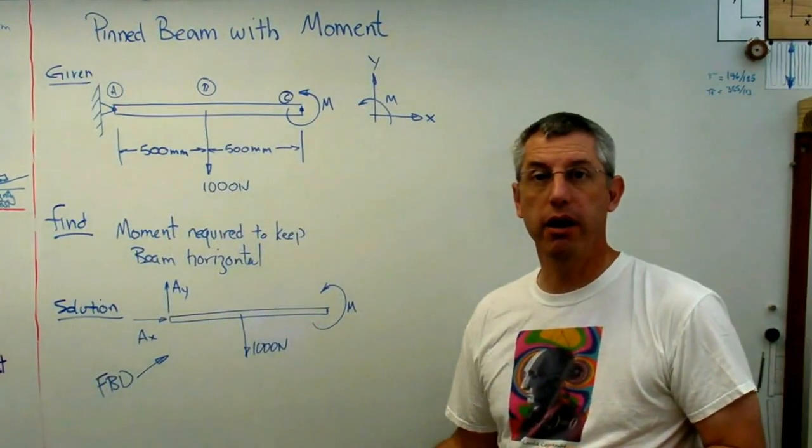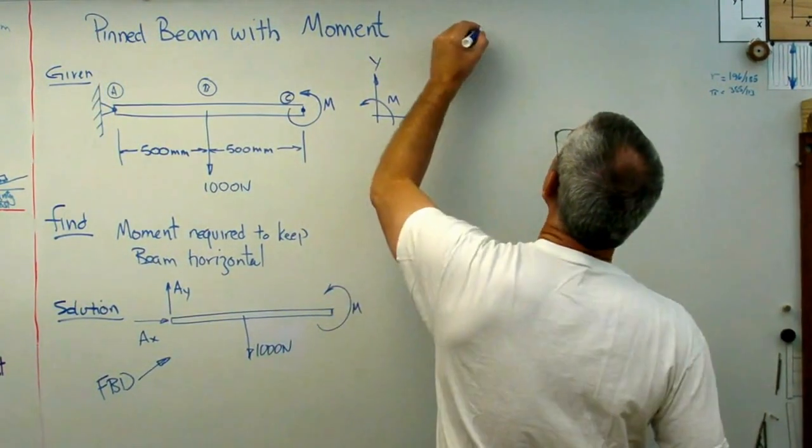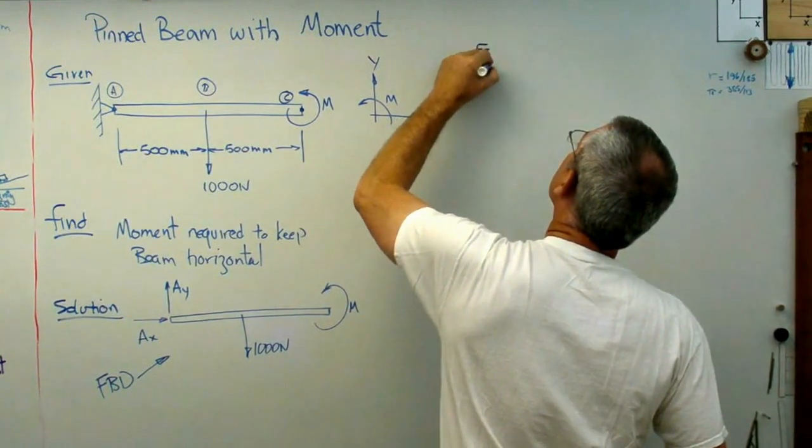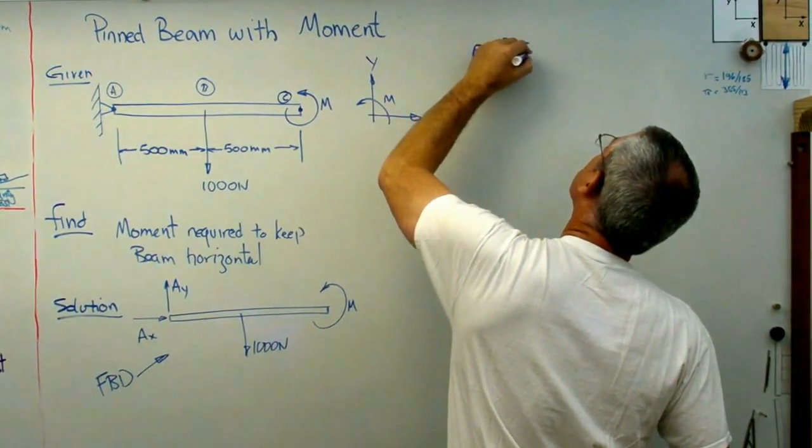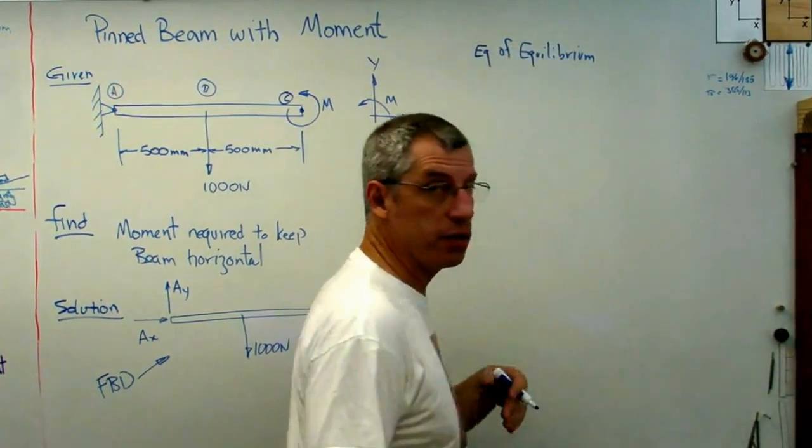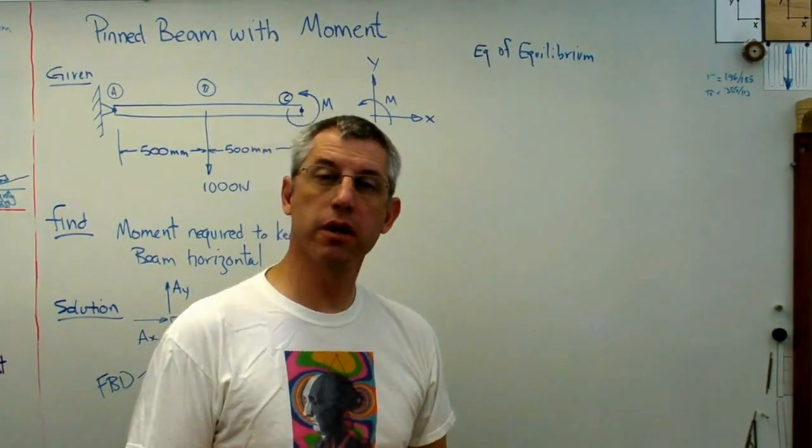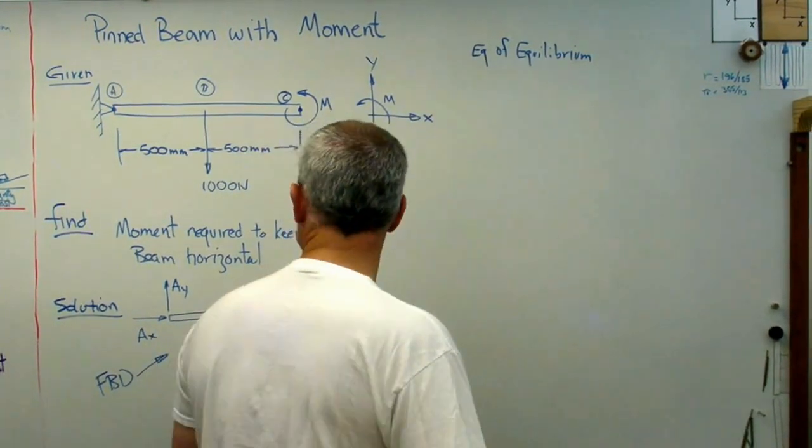So I've got a free body diagram. That's the first step here. What's the next step? Write equations of equilibrium. I wish this was a shorter name. Equations of equilibrium. Remember, this thing is supposed to be static. It's not supposed to be moving, so sum of all the forces and sum of all the moments have to be zero.